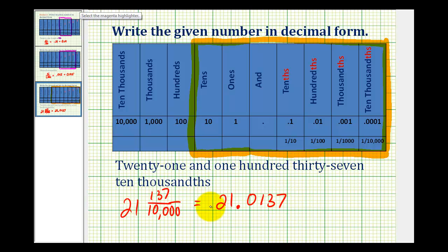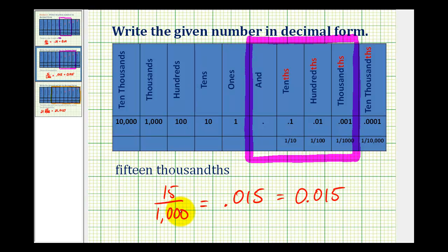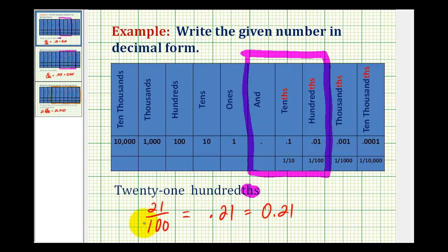A nice reason to write it as a fraction first is notice how we have four zeros in the denominator and four digits to the right of the decimal. In the previous example, we had three zeros in the denominator and three digits to the right of the decimal. And in the first example, we had two zeros in the denominator and two digits to the right of the decimal.